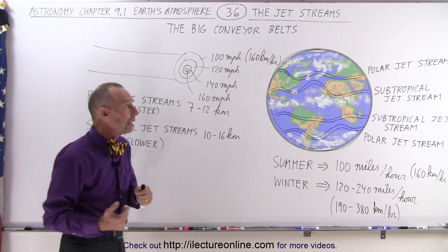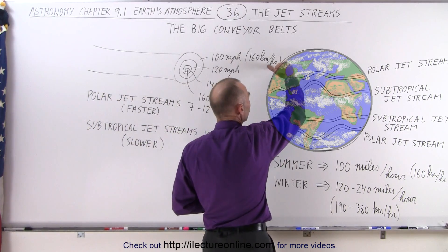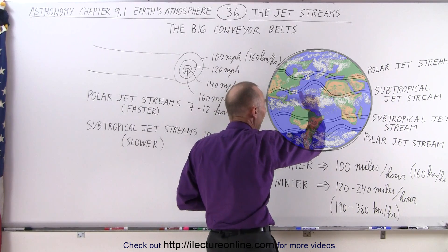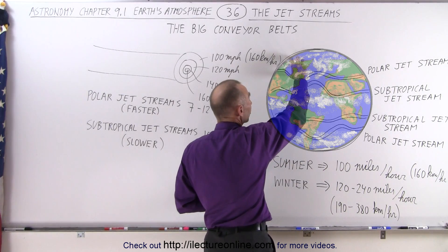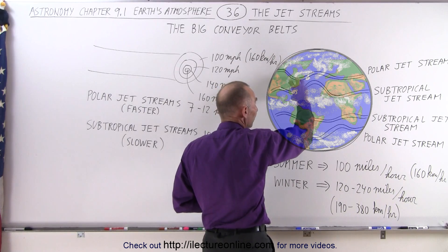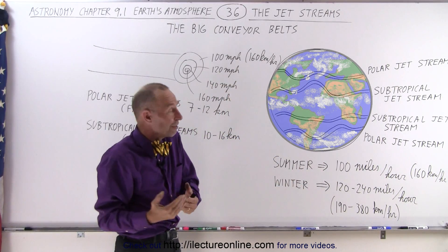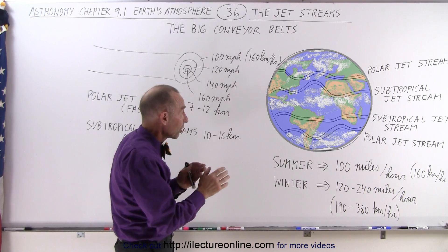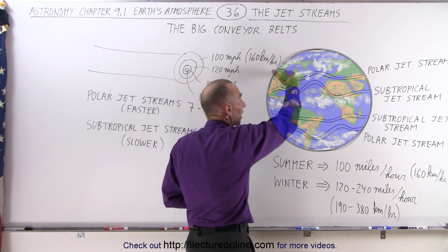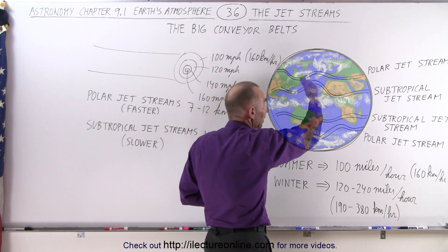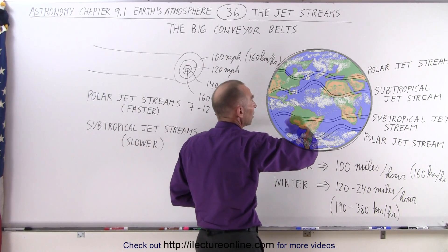The tropical jet streams tend to be slower in wind speed, while the polar jet streams tend to have faster wind speeds. Typically the polar jet streams, when they swing down — and they sometimes swing quite a ways down, thousands of miles downward — they bring super large masses of very cold air very far south, with the result that regions that normally don't see very cold temperatures can get extremely cold for a period of time, for days, maybe up to a week, until that air mass moves on to a different location.